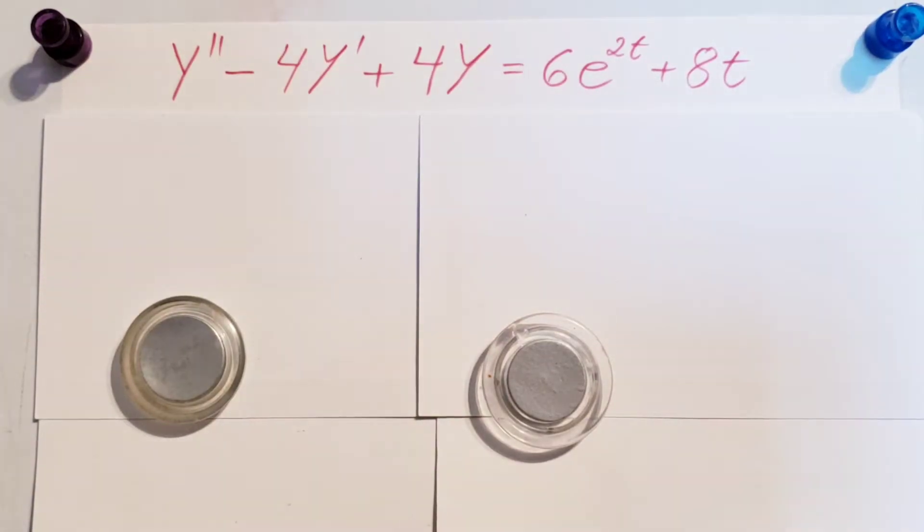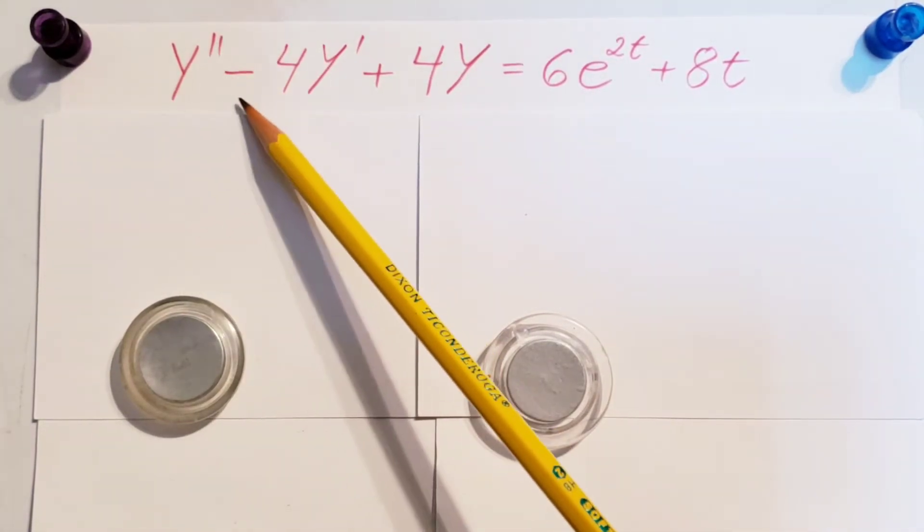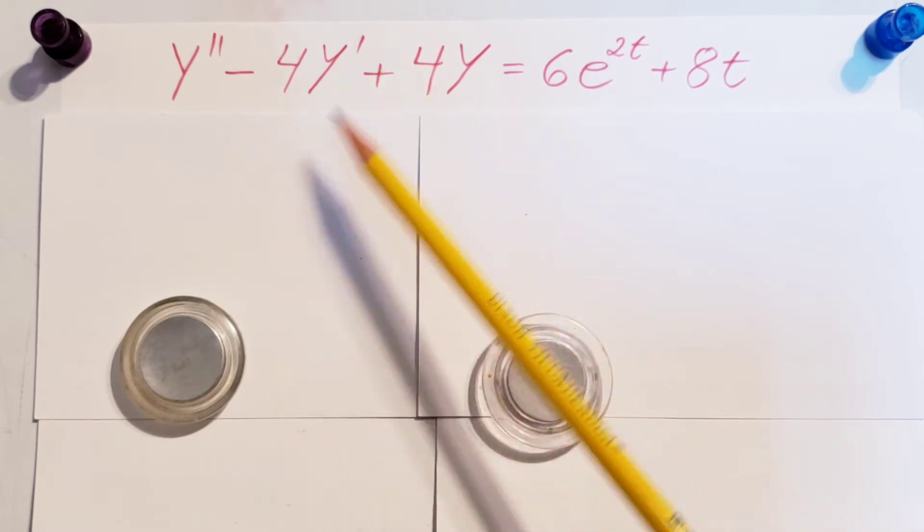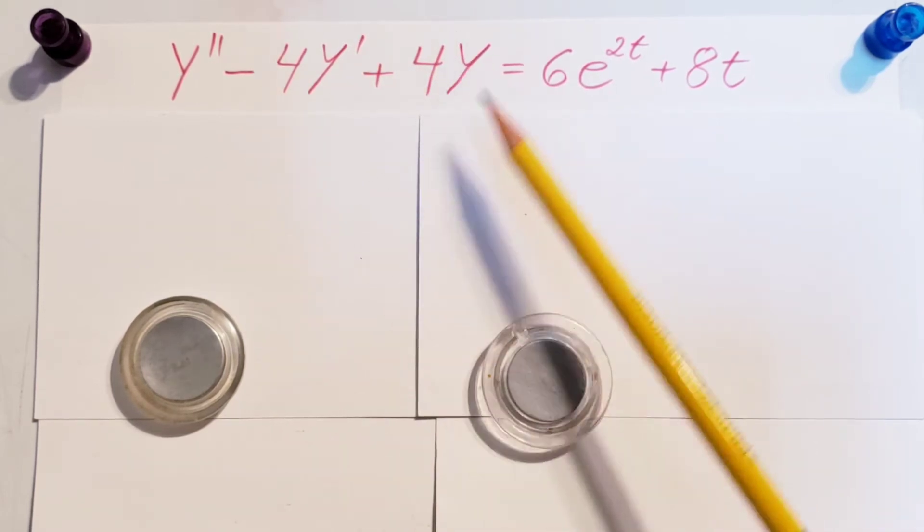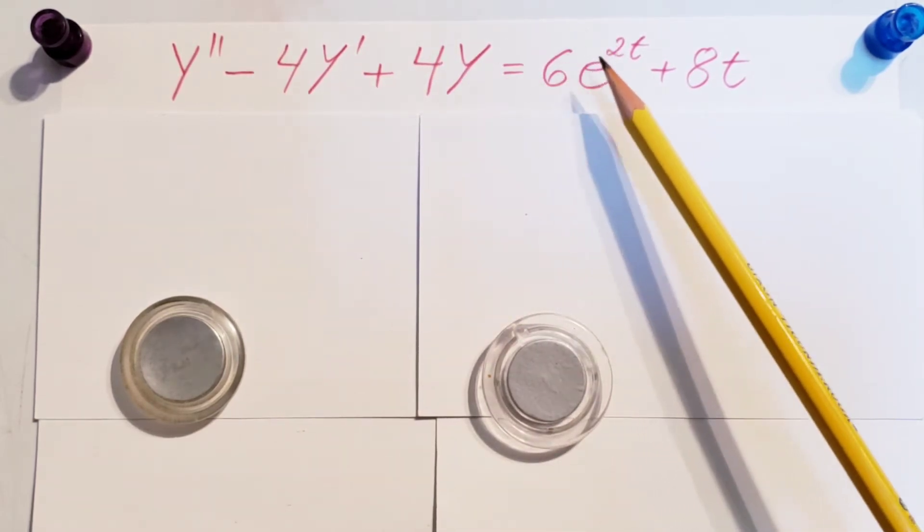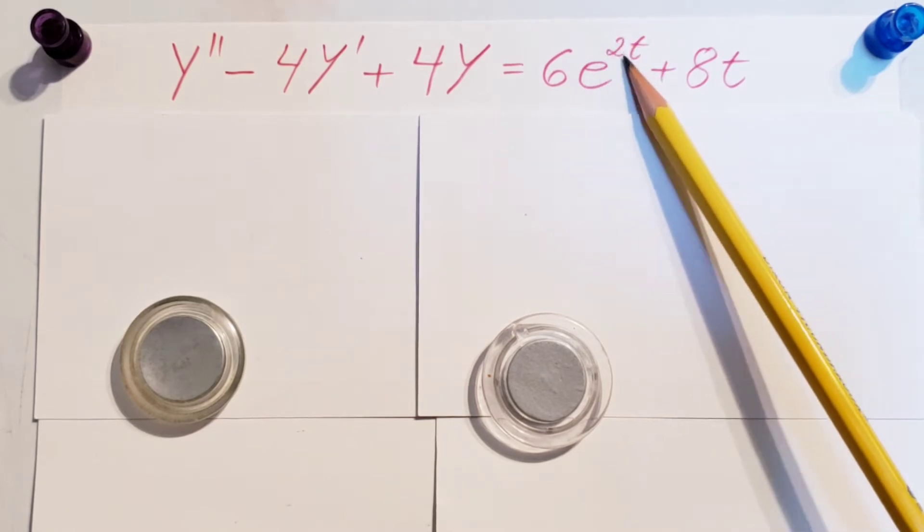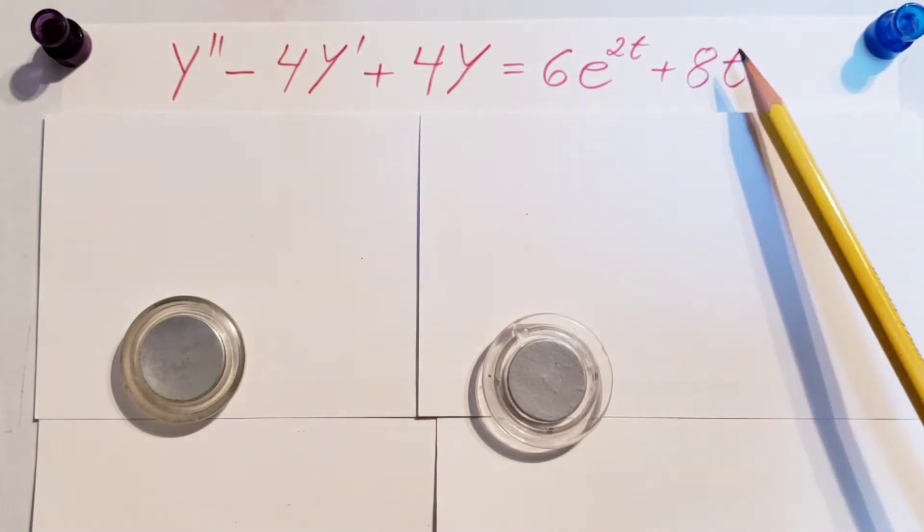Let's solve the following ODE: y double prime minus 4y prime plus 4y equals 6e to the power of 2t plus 8t.